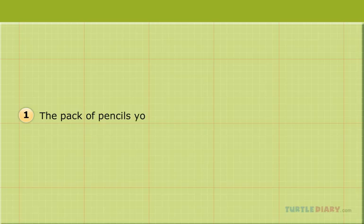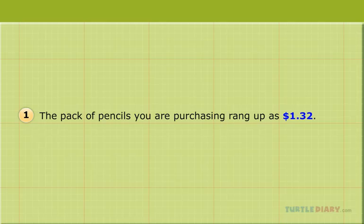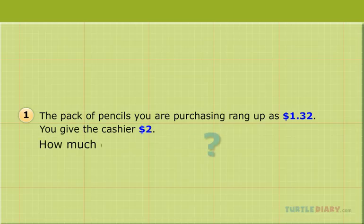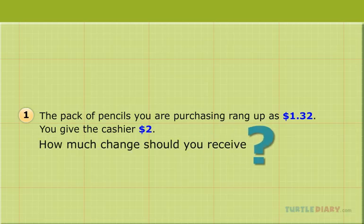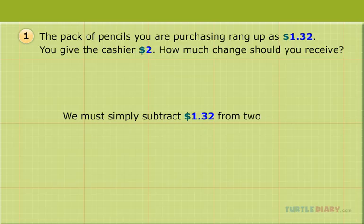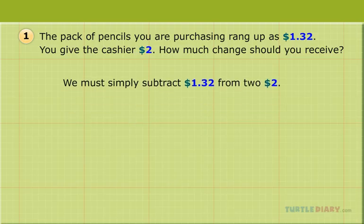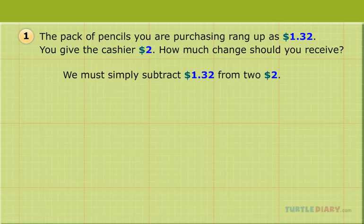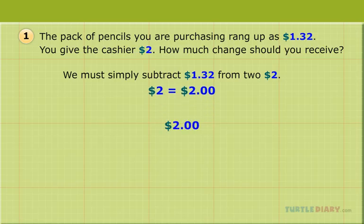The pack of pencils you are purchasing rang up as $1.32. You give the cashier $2. How much change should you receive? We must simply subtract $1.32 from $2. But don't forget to line up the decimals.